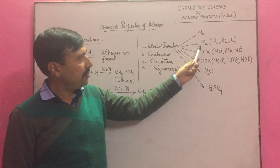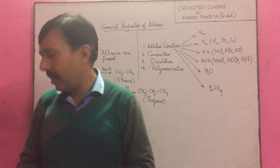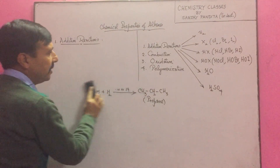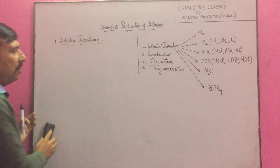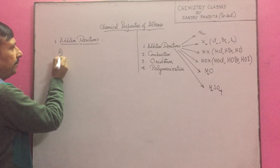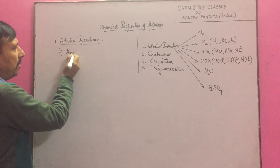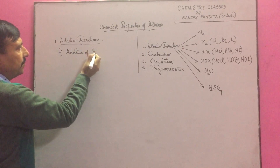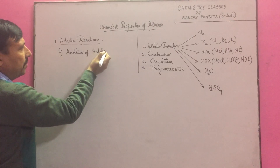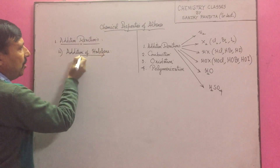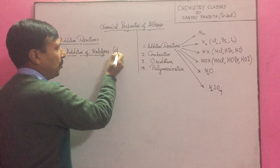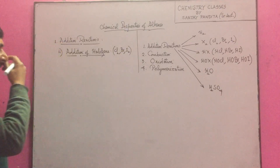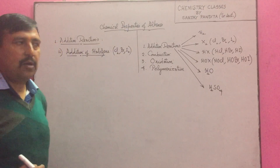Now we will proceed to the second part — addition of halogens. That is the second addition reaction. Halogens means chlorine, bromine, iodine, and even fluorine.